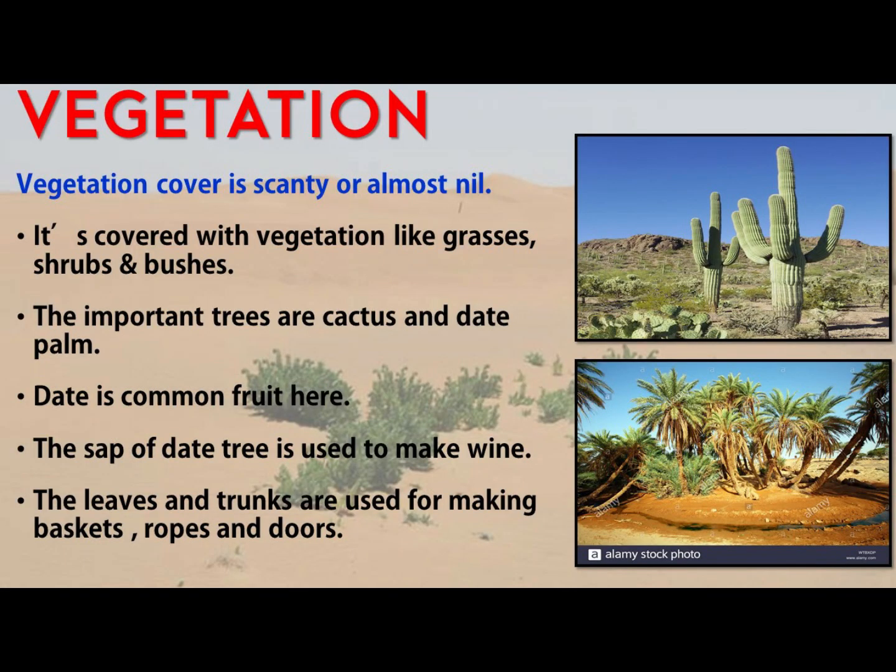Now let's see the vegetation of the Sahara desert. Due to high temperature and low rainfall, vegetation cover in Sahara is almost nil — very less. Whatever vegetation is found is near the Nile river valley. Sahara is covered with vegetation like grasses, shrubs and bushes.